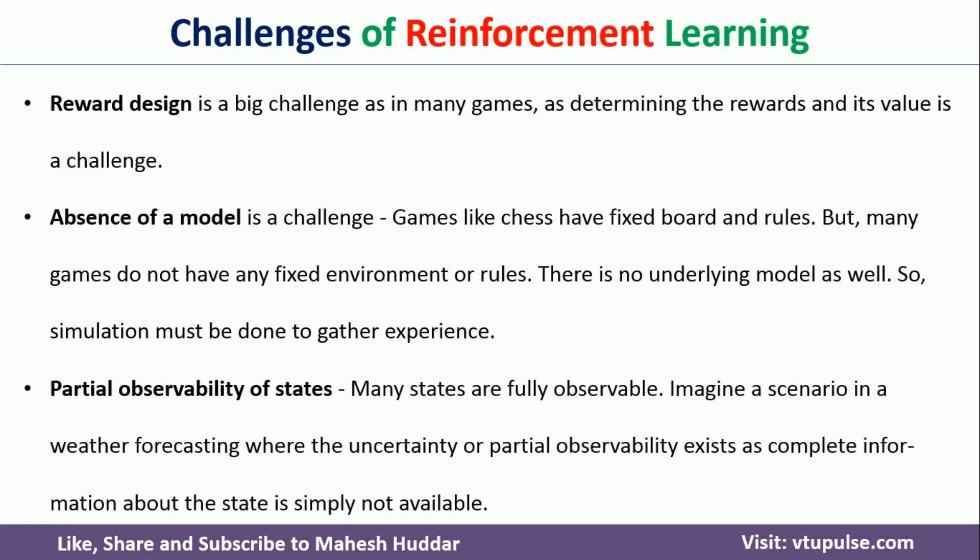The next challenge is partial observability of states. Sometimes the entire environment may be fully observable, but sometimes it may not be visible. If it is fully observable, there is no issue. If it is not, — for example, when applying reinforcement learning to weather forecasting — in many cases you will not be able to see the entire environment. In such cases, it is very difficult to use reinforcement learning effectively.